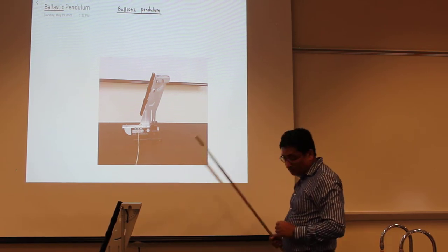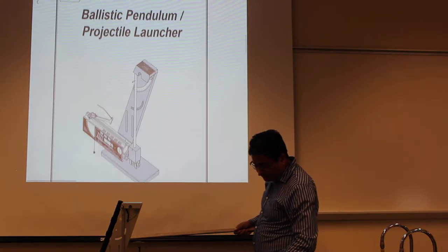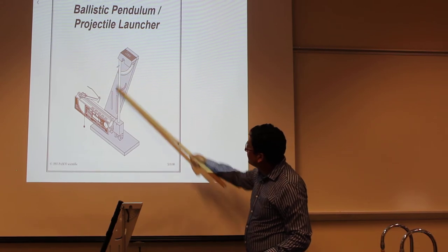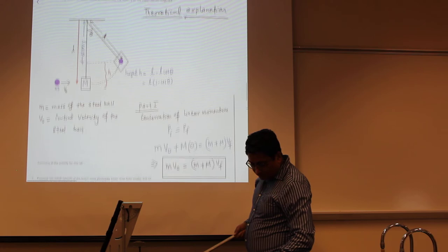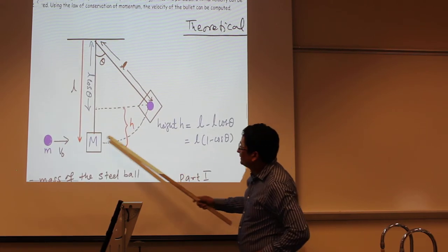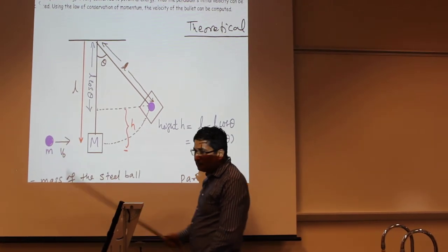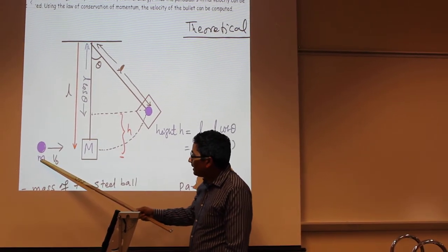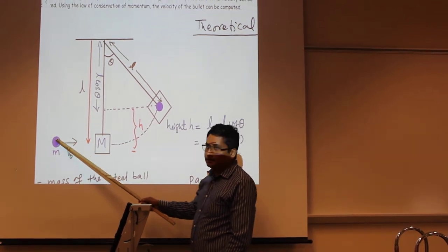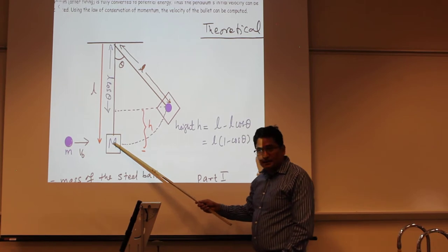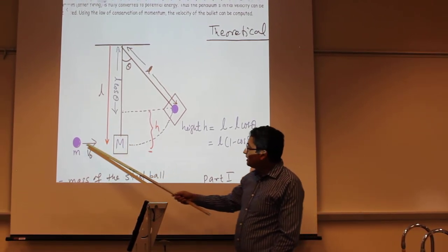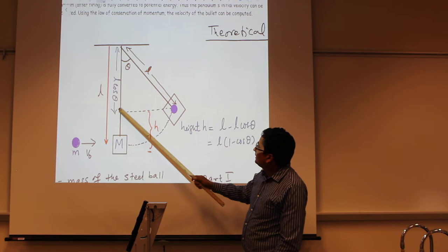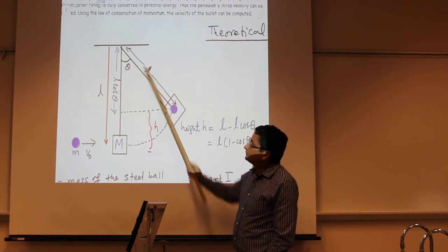This is the ballistic pendulum in practice again — this is something you're going to see in the first phase of the PASCO lab manual. Now for the theoretical explanation: this is the bullet — the mass of the steel ball, or whatever type of ball we use — represented by small m, and V0 is the initial velocity of this bullet. Remember, the ballistic pendulum is not moving in the beginning, so its velocity is zero. When we launch, the ball will be captured by the ballistic pendulum, swing, and move with angle theta.